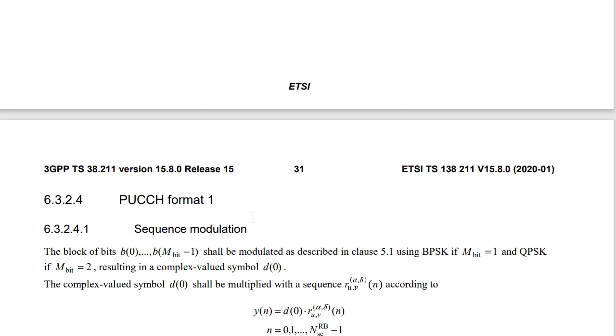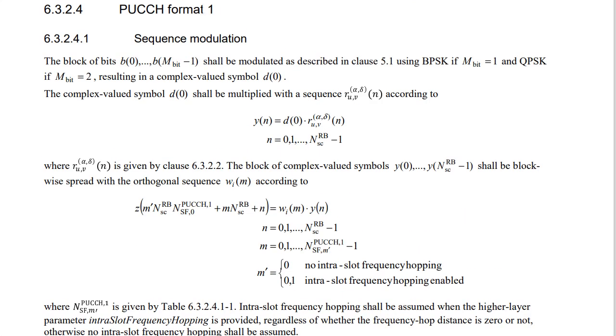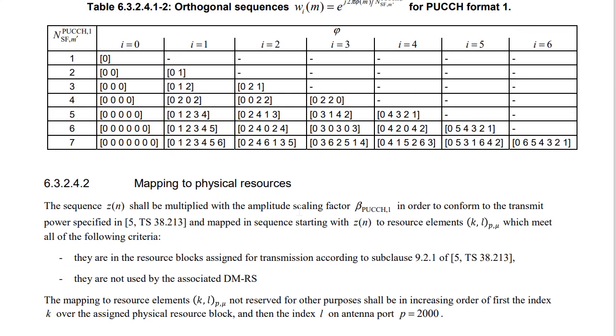And what about the other item? If I get back to this specific Format 1 generation, then you will see that here we have got orthogonal sequence, W_i. This W_i is multiplied to this Y and this is utilizing the orthogonality in the time domain. Here we need to see how to generate this W_i and this W_i is given as per the table mentioned below. So this is the table W_i.